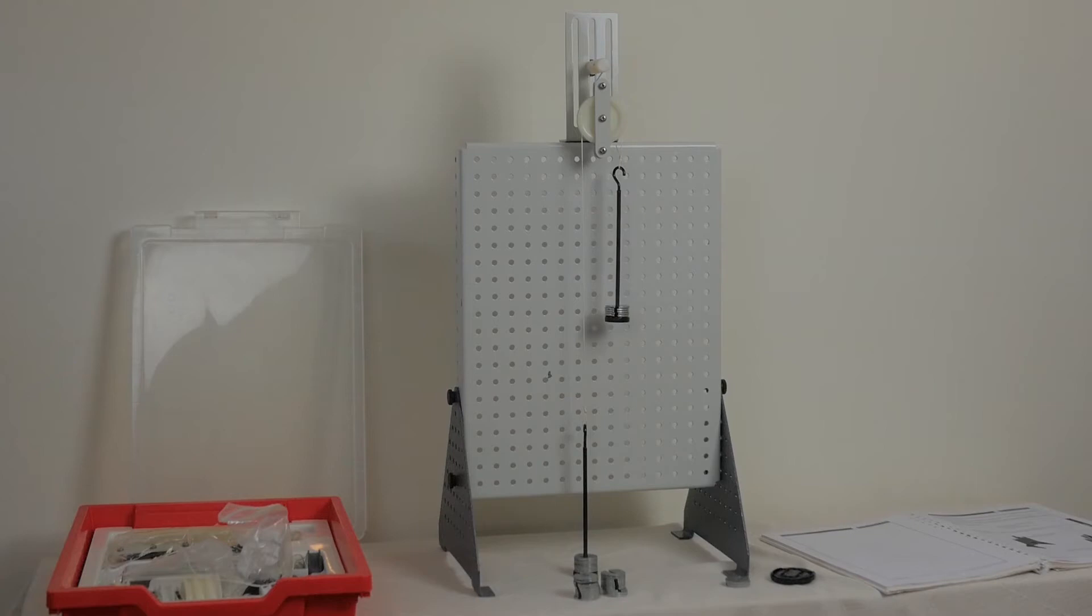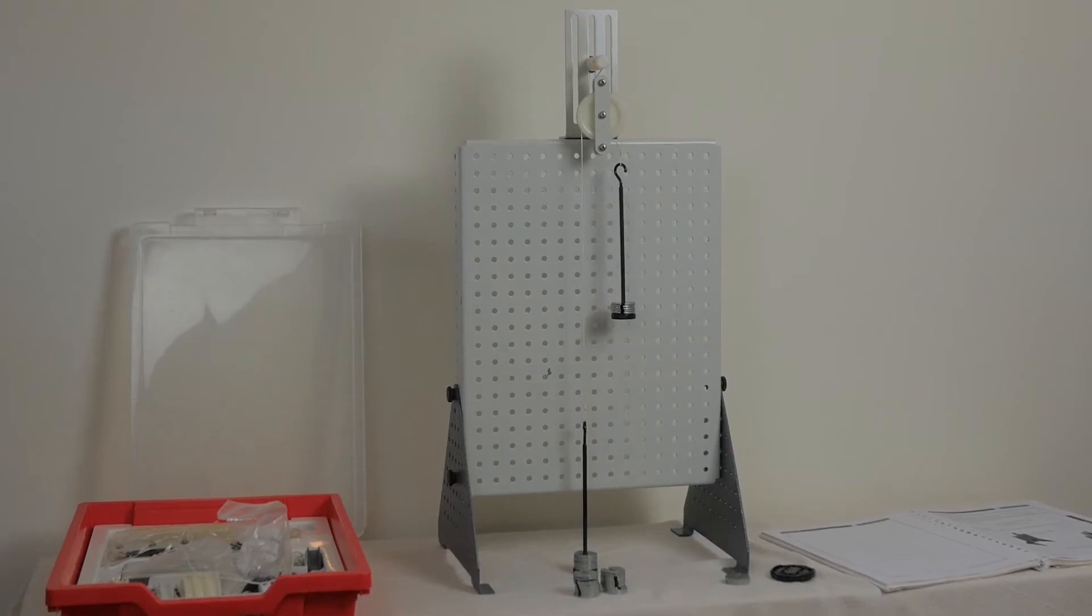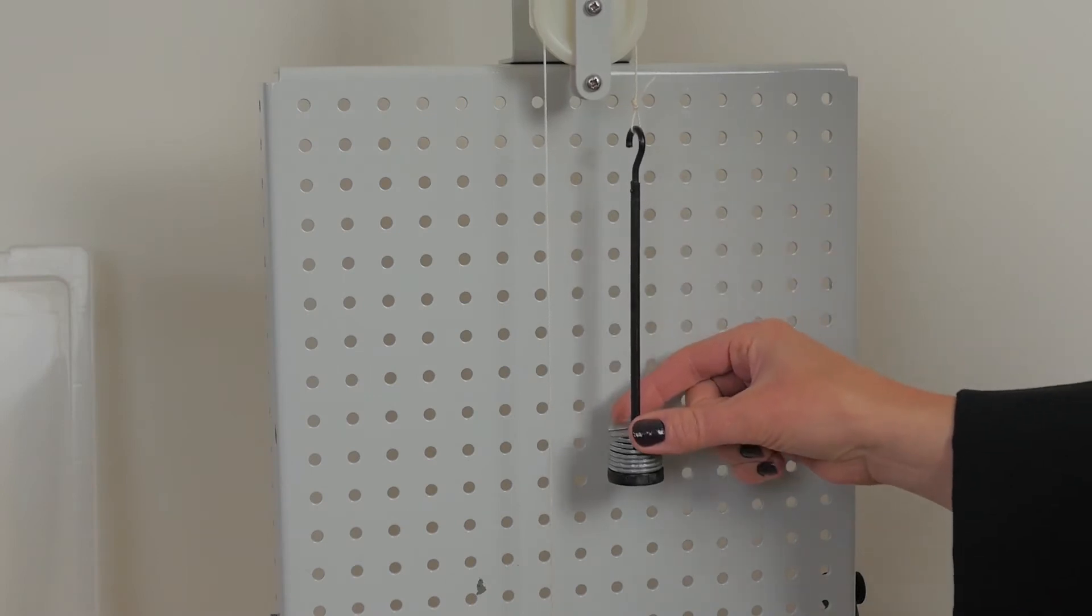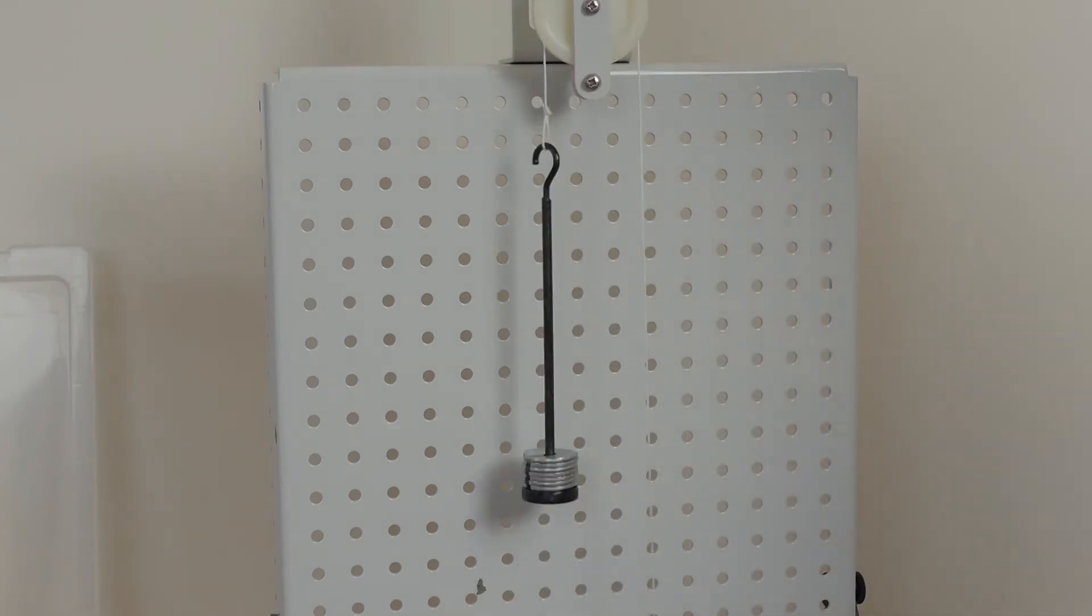The first part of this experiment is to look at the behavior of a fixed pulley set up like this. You choose which one of the weight hangers represents the load and which represents the effort. First up, you start by adding a load of 100 grams and see how much effort in grams is needed to lift the load.